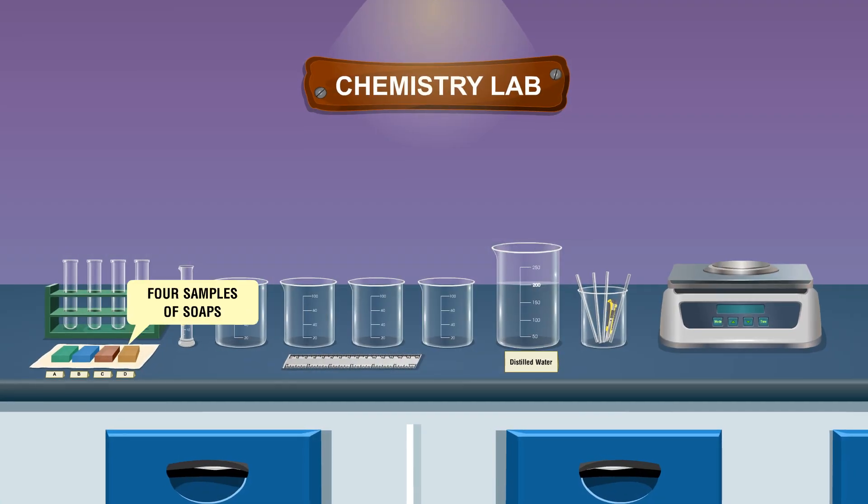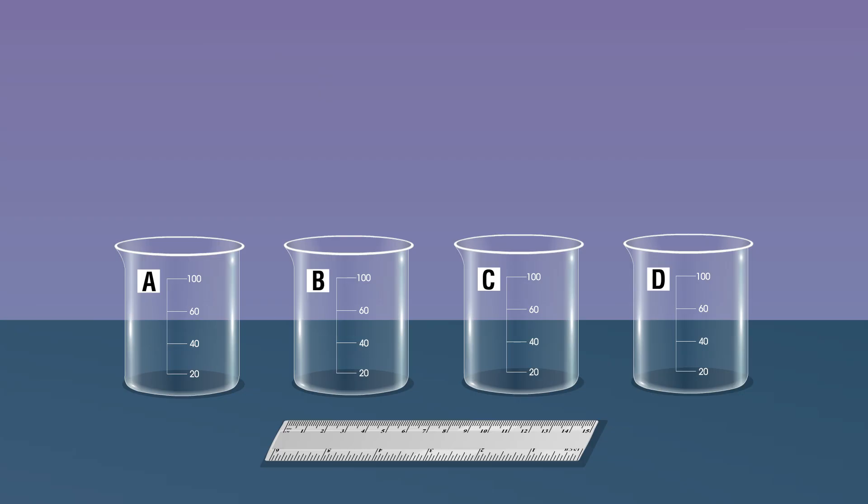For different samples of soaps, distilled water, electronic balance, four test tubes, four beakers 100 ml, four glass rods, a measuring cylinder, and a measuring scale 15 centimeters and a cutter knife. Take four labeled 100 ml beakers.